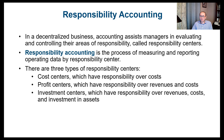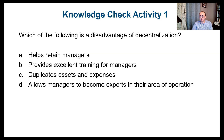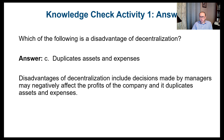Let's check our knowledge quickly. Which of the following is considered a disadvantage of decentralization? Helping retain managers — that's an advantage. Providing excellent training for managers — that's also an advantage. Duplicating assets and expenses — yes, that's one of the cons of decentralization. Allowing managers to become experts in their area — again, that's an advantage. So the only correct answer is C. Disadvantages include decisions made by managers that may negatively affect the profits of the company as a whole, and duplication of assets and expenses.